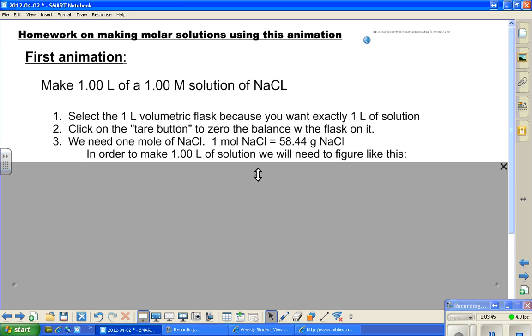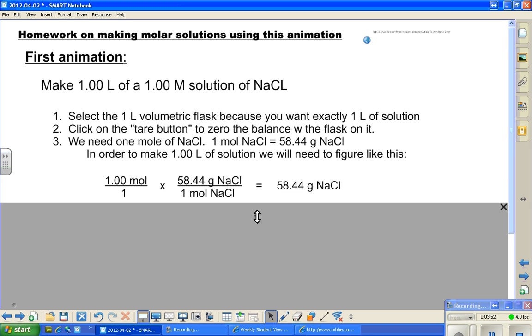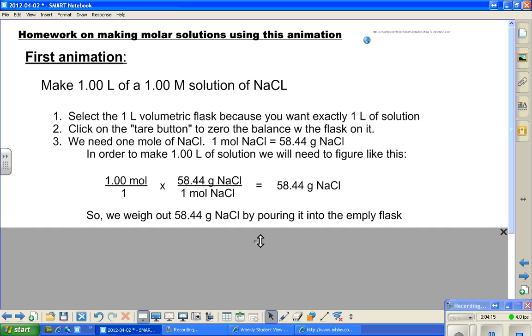In order to make the one liter of solution, we'll need to figure it like this, and I want to see this calculation. We have 1.00 mol / 1 times 58.44 g NaCl / 1 mol NaCl equals 58.44 g NaCl. So, we weigh that out by simply pouring it into the empty flask, which, by the way, must be dry. Because if we put a little bit too much in, we can't get it out if it's wet, because it will be stuck to the insides. Dry is the name of the game with this guy.